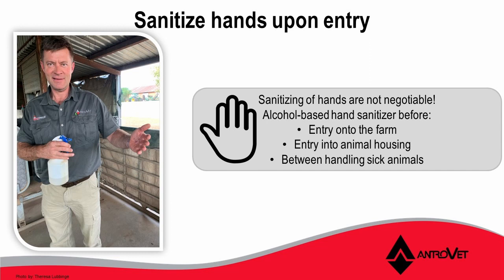Now that we've looked at the simple principles, let's look at the practical things we can do to implement this plan — steps you can start tomorrow on your farm. First and foremost, we can look at sanitizing hands upon entry. The sanitizing of hands is not negotiable. Alkyl-based sanitizer can be placed at the entry of the farm, the entry of animal housing, and between handling of sick animals. This is a very important step for not transmitting any sickness or disease to animals that are not sick.